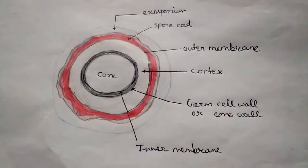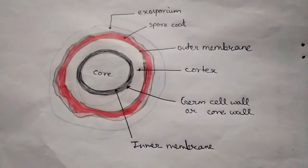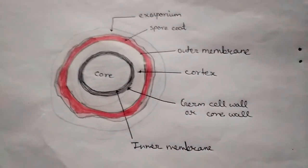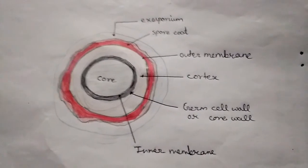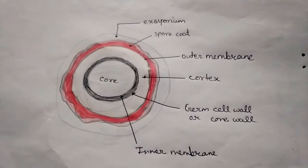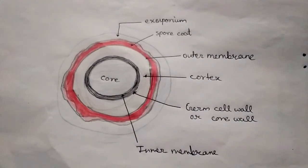So due to this calcium dipicolinate and acid-soluble protein stabilization of DNA, and spore core DNA repair, the endospore is a resistant structure.